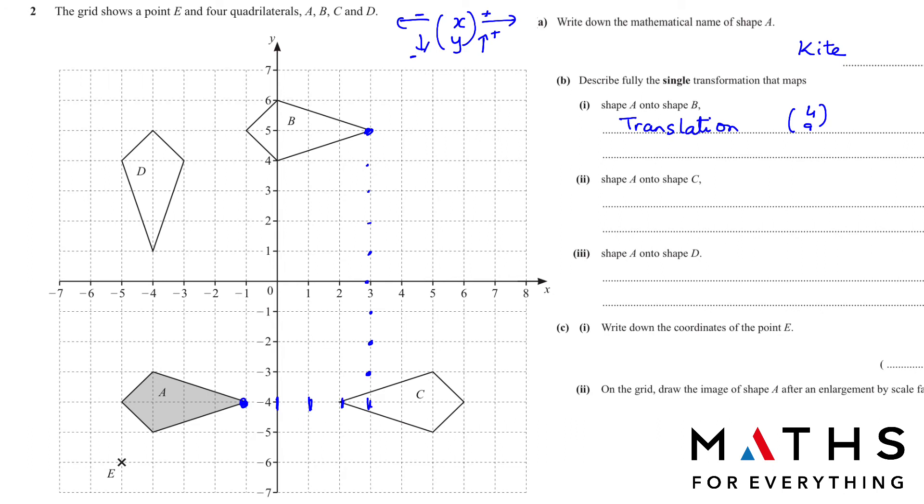One other thing that helps is that whenever you are solving and normally like 99.9%, if it's a 2 mark question, it will be either translation or reflection. If it's a 3 mark, it will be rotation or enlargement. So that is something to keep in mind.